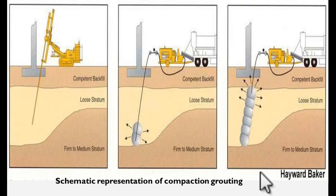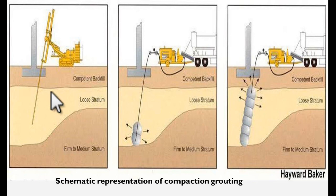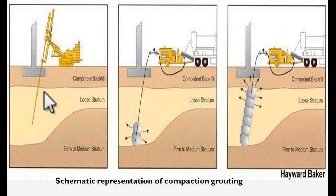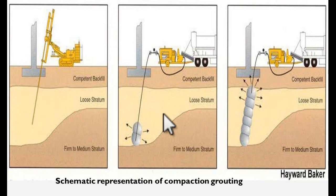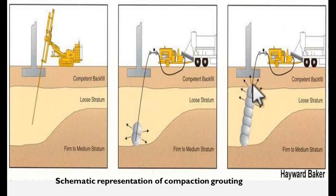This is a schematic of compaction grouting. You can see here. Soil is weak below a competent backfill soil — a loose stratum. By using heavy machinery, under a footing, grouting is started and it is continued till the bottom of the foundation, or as required and decided by the engineer in charge.